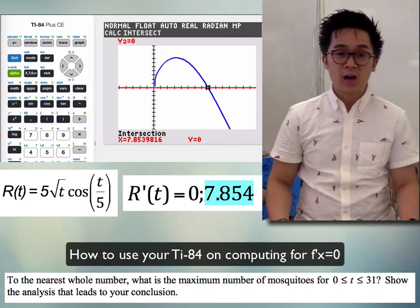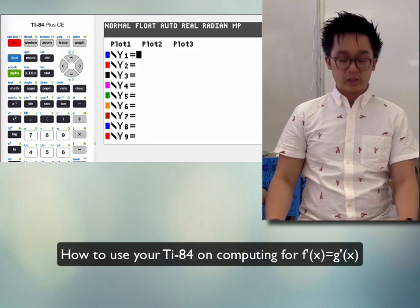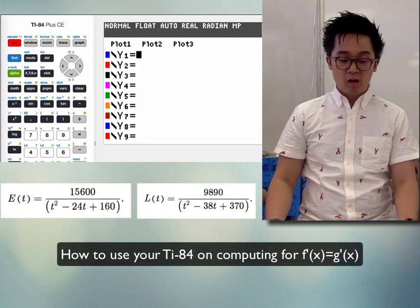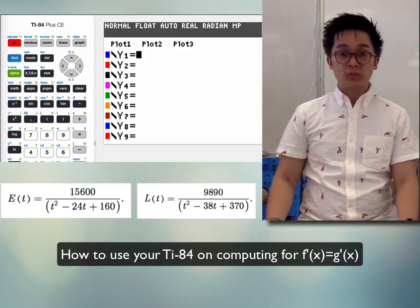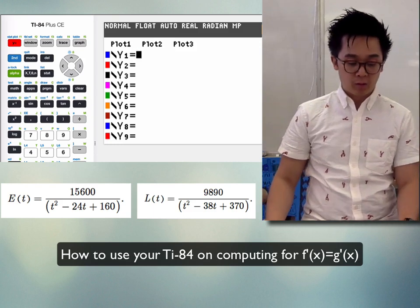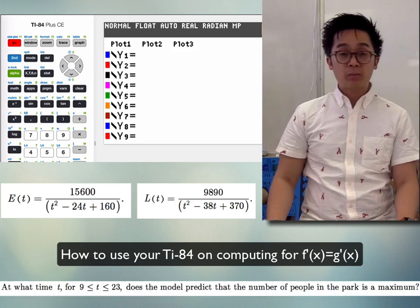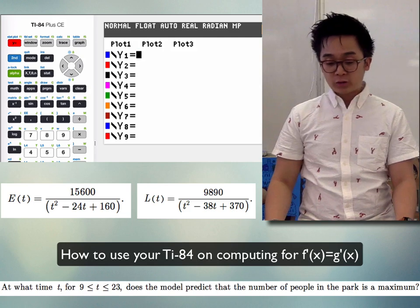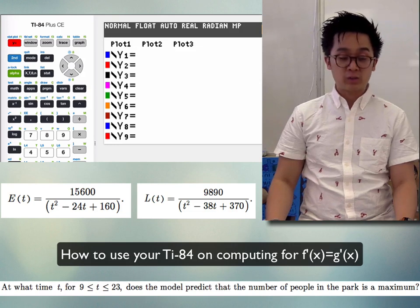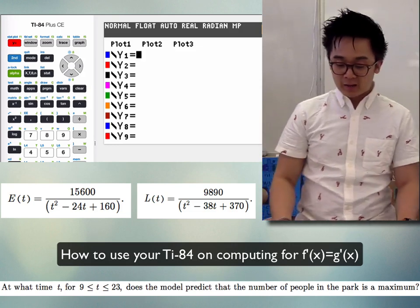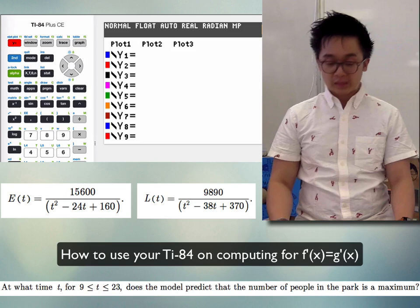From the 2002 FRQ, we are given two functions E(t) and L(t), both derivative functions representing the rate of change of people entering and leaving the amusement park. Part (d) asks us to find when the park has the maximum number of people, so we need the critical number — the point of intersection of the two derivative functions. Let's plug E(t) and L(t) into Y₁ and Y₂ in our TI-84.